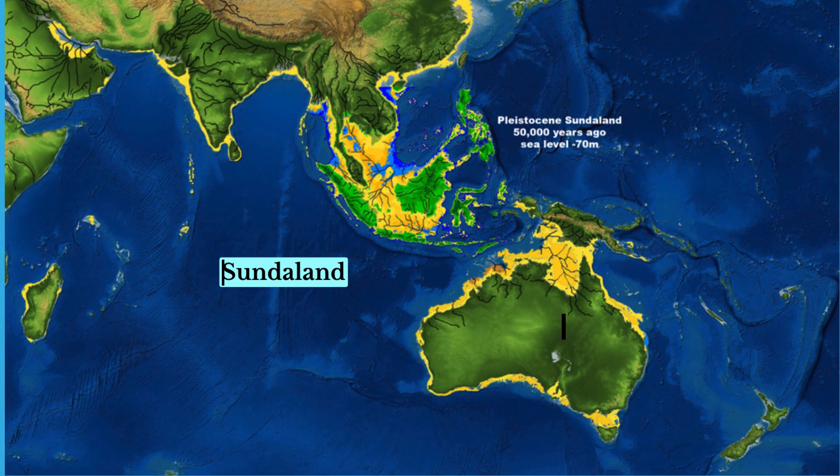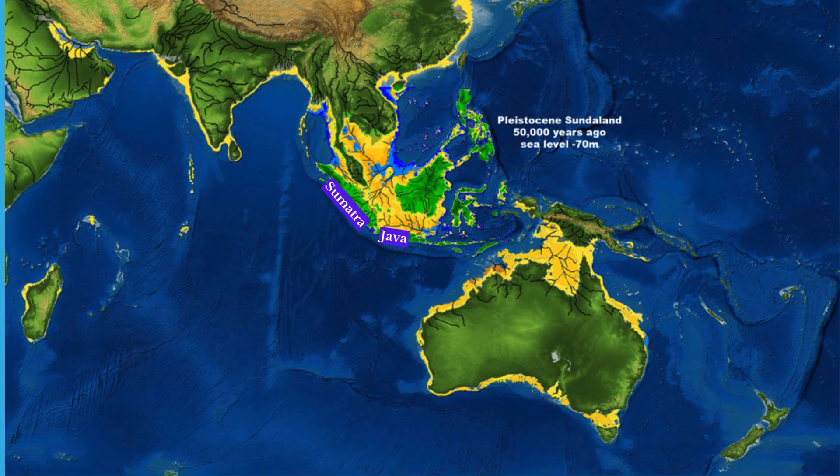During periods of low sea levels in the past, Southeast Asian regions including islands like Sumatra, Java, Bali, and Borneo formed an extended landmass known as Sundaland or Sunda.